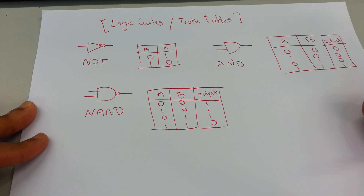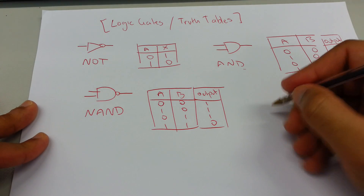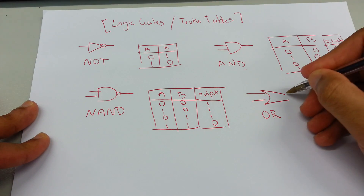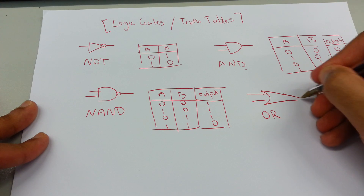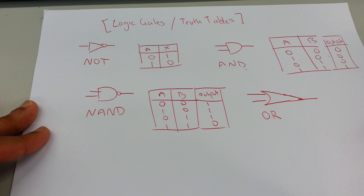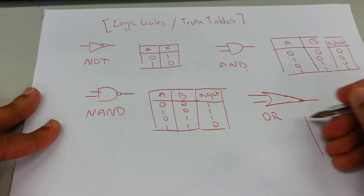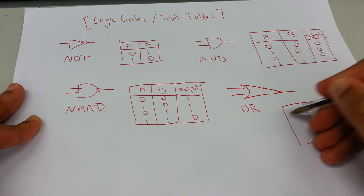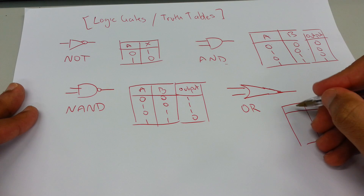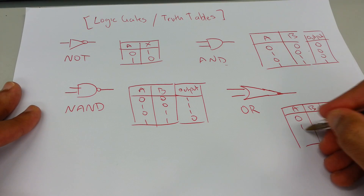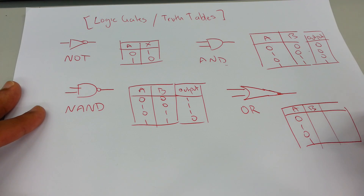The next one is the OR gate. So to draw this it's — okay, the table is A and B, so A is: 0, 1, 0, 1 and B is: 0, 0, 1, 1.